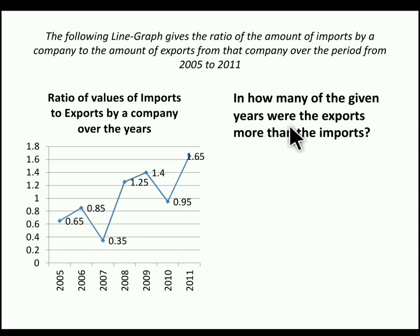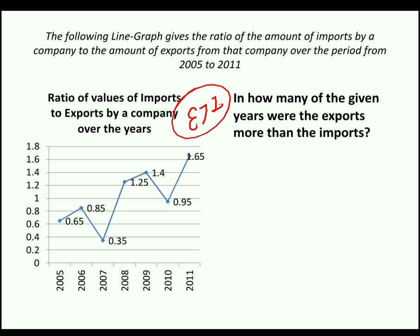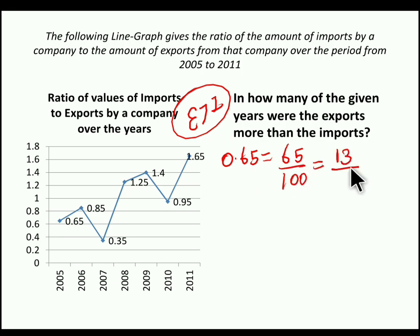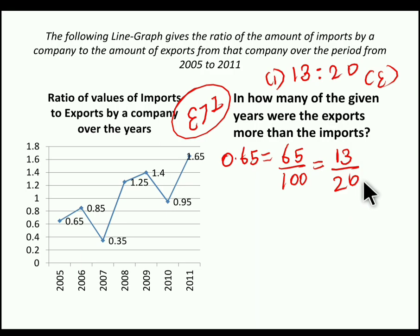Our first problem is: in how many of the given years were exports more than imports? You have to find in how many of the given 7 years export is greater than import. If the value were given in fractional format, you could easily identify this. But here the value is given in decimal. If the value is given in decimal, you have to convert it into an equivalent fraction. You have to find this for all 7 years.